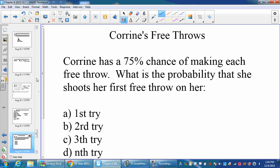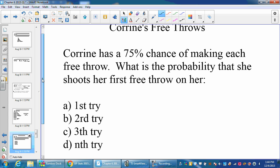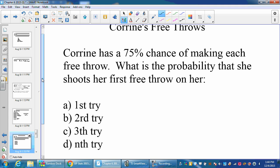So let's look at Karine again. She's a 75% free throw shooter. What's the probability she makes her first free throw on her first try? Well, she makes it on the first try. So that's 0.75.